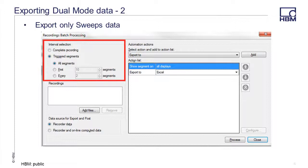Another possibility is to only export the sweeps portion of the data. If nothing of interest happened between the sweeps, the continuous data may not be needed for analysis. From the Automation menu, select Recordings Batch Processing. In the Interval Selection portion of the dialog, select Triggered Segments. In the Actions section of the dialog, select Export To and click the Add button. This will export only the sweeps portion of the dual-mode data file.